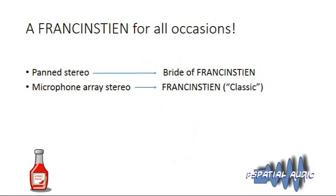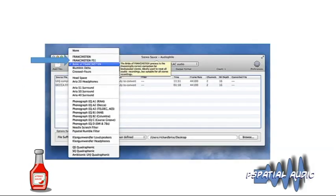In summary: for pan stereo sources the Bride of Frankenstein is the best algorithm, and for microphone-array stereo — classical recordings, concertos, symphonies — they're probably best processed with the original Frankenstein. Now we look at the Frankenstein FS1.